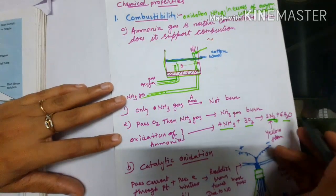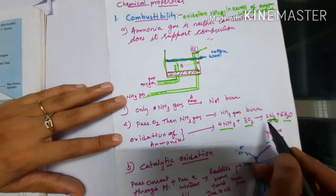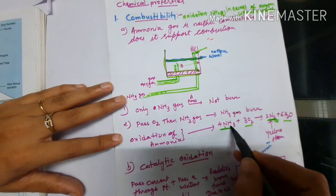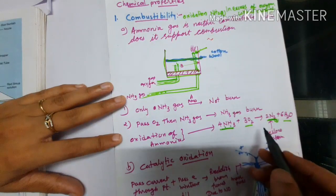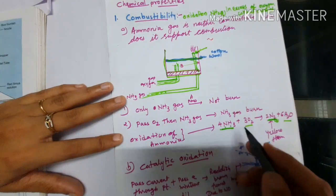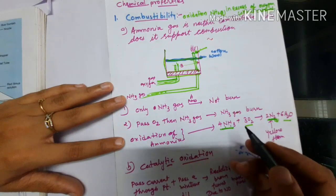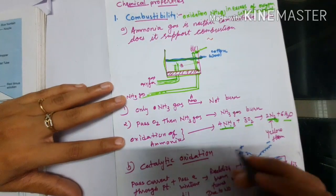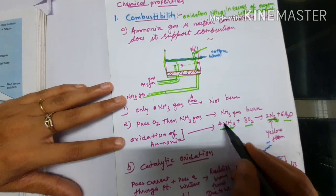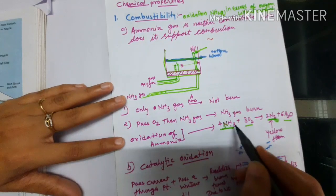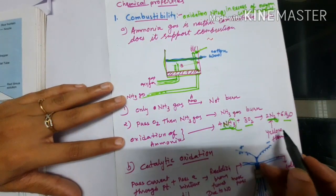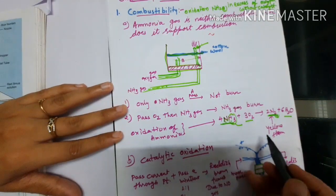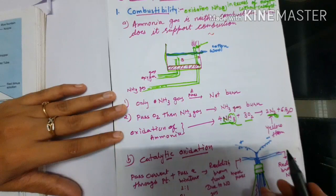Now, how can we confirm it is an oxidation reaction? From this ammonia, hydrogen is going out. That is why we can say it is an oxidation reaction. As we learned in ninth standard, oxidation reaction means removal of hydrogen or addition of oxygen. Here, from the ammonia, hydrogen is being removed — that is why this reaction is known as an oxidation reaction.